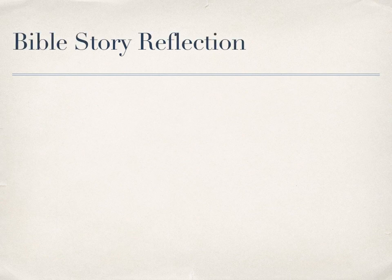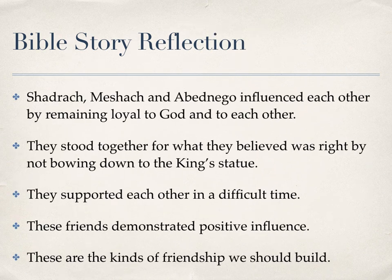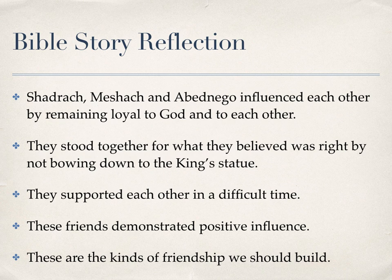Let's recall our focus questions for this Bible story: How do the friends influence each other? Is the influence positive or negative? Shadrach, Meshach, and Abednego influenced each other by remaining loyal to God and to each other. They stood together for what they believed was right by not bowing down to the king's statue. They supported each other in a difficult time. These friends demonstrated positive influence — these are the kinds of friendships we should build.